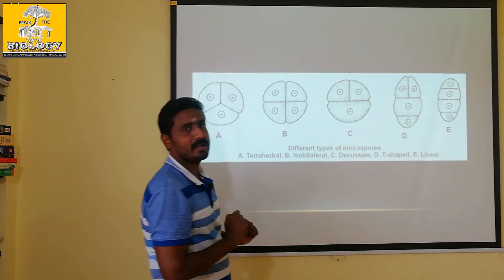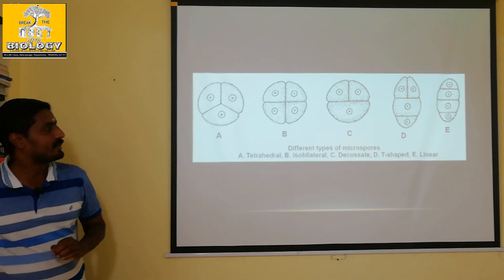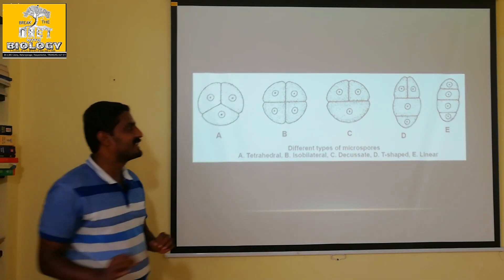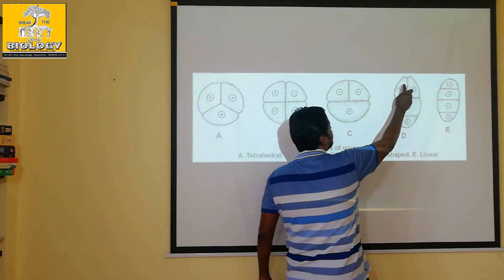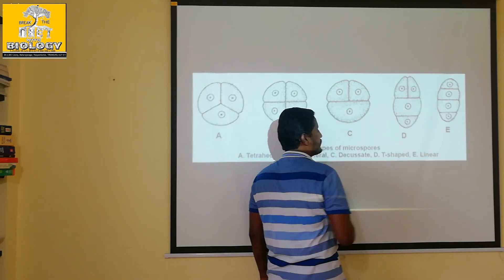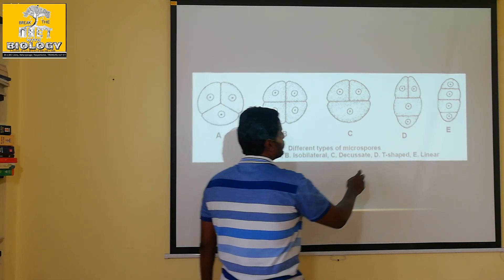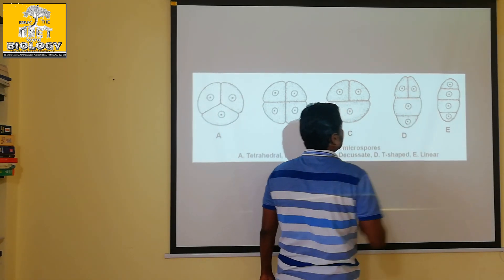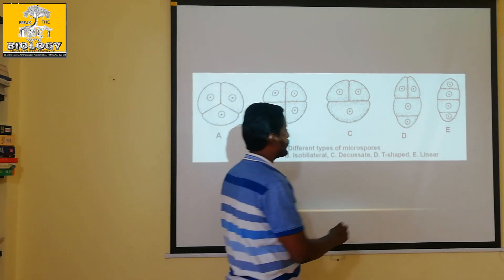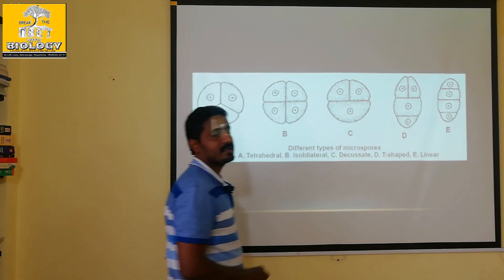This arrangement is called decussate. The next one is T-shaped. This is T-shaped — a microspore tetrad arrangement. And this is linear — linear is a 4-arrangement of microspores.